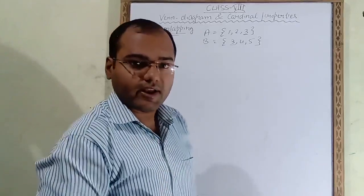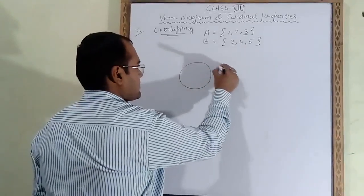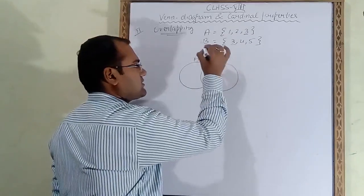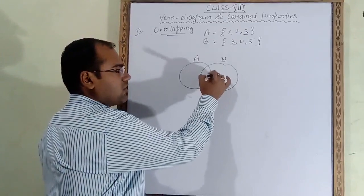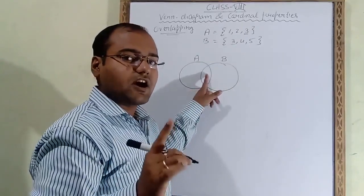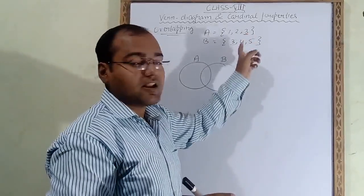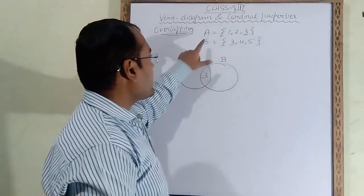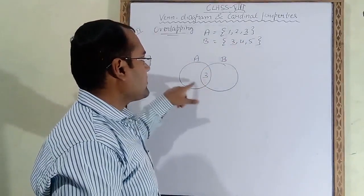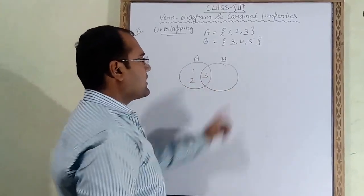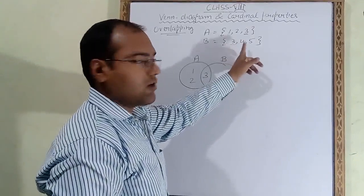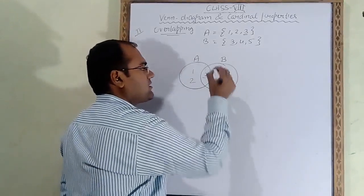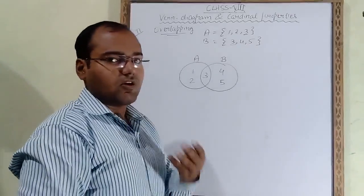For an overlapping Venn diagram, draw two circles that cut each other. Label the first circle A and the second circle B. In the middle overlapping part, fill the common element — 3. Then in the remaining part of circle A write 1 and 2, and in the remaining part of circle B write 4 and 5. This is the Venn diagram for overlapping sets.